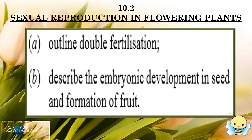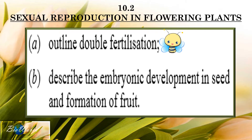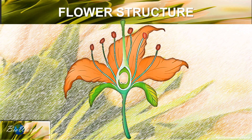I'm going to start the video off by outlining double fertilization. To do that, we need to understand the structure of the flower. Flowers are special because they have both the male as well as the female reproductive structures within the same flower.